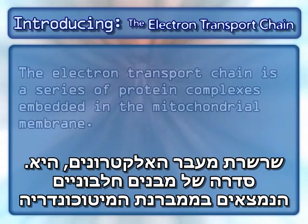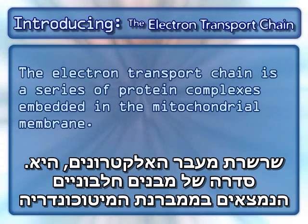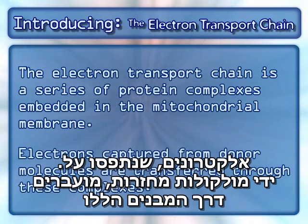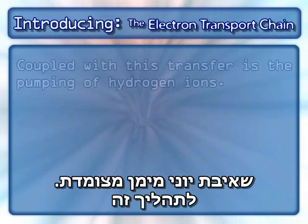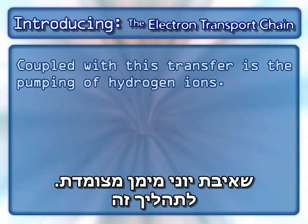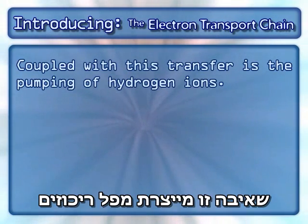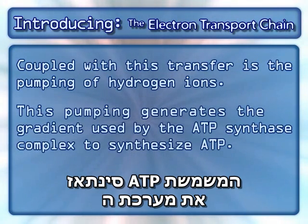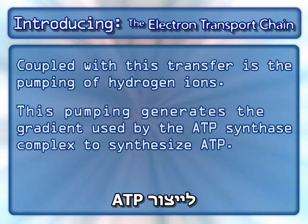The electron transport chain is a series of protein complexes embedded in the mitochondrial membrane. Electrons captured from donor molecules are transferred through these complexes. Coupled with this transfer is the pumping of hydrogen ions. This pumping generates the gradient used by the ATP synthase complex to synthesize ATP.